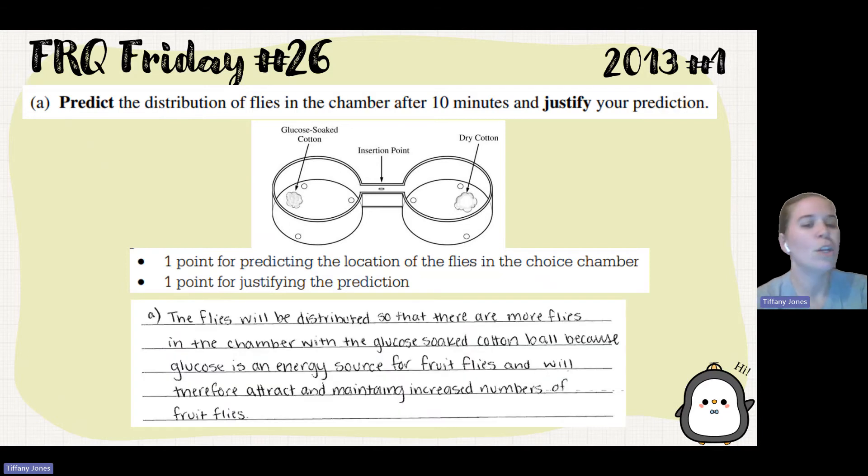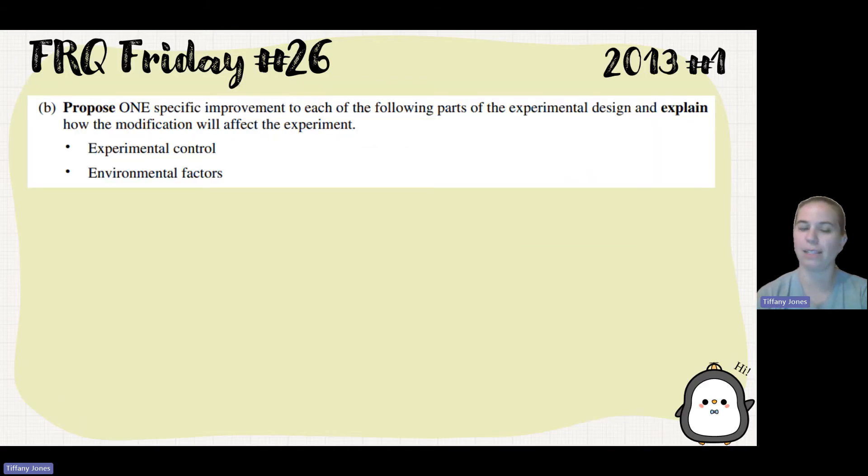But if you left it blank, you also wouldn't get that point. So go ahead and try these. Students said the flies would be distributed so that there would be more flies in the chamber with the glucose-soaked cotton ball because glucose is an energy source for fruit flies and will therefore attract and maintain increased numbers of fruit flies.